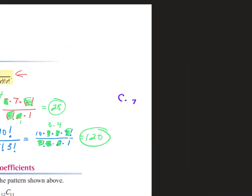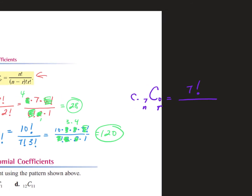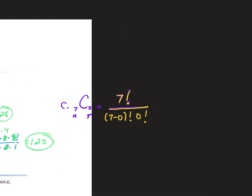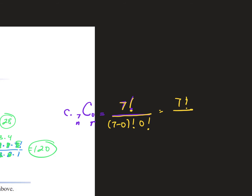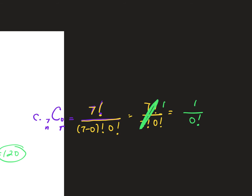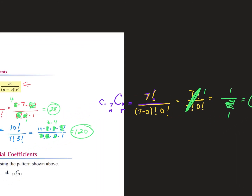Let's look at C: it's 7 and 0. N is 7, R is 0. So it's 7 factorial over 7 minus 0 factorial times 0 factorial — that's 7 factorial over 7 factorial times 0 factorial. The 7 factorials cancel, leaving 1 over 0 factorial. But 0 factorial equals 1, not 0. So 1 over 1 is 1. Remember, 0 factorial is the number 1 — don't get that confused.